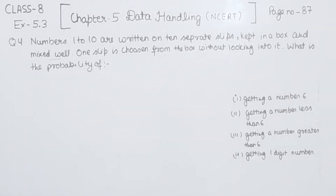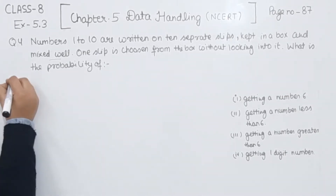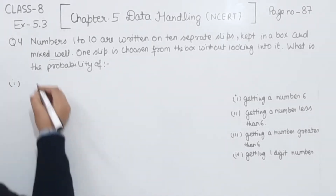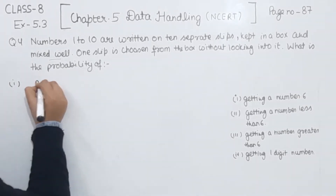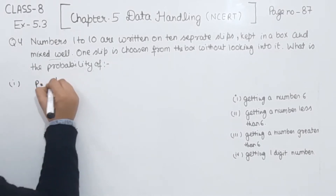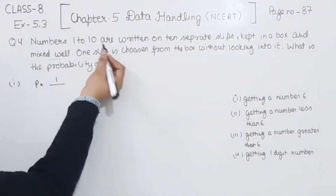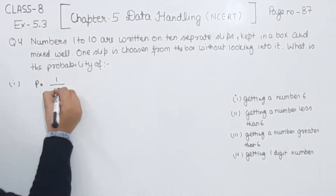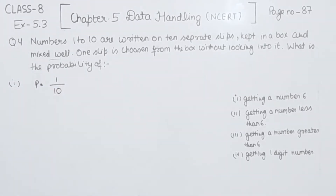Start with the first one. In the first part, getting a number 6. So on the slips, we have the numbers 1 to 10, so 6 will appear only one time. So the probability will be 1 and the total outcomes we have 10. So the probability will be 1 by 10 of getting a 6.